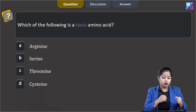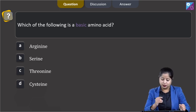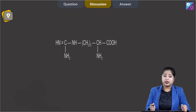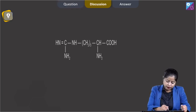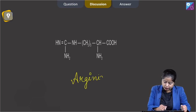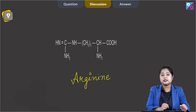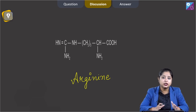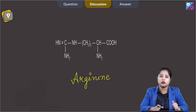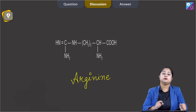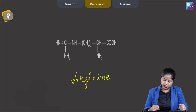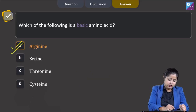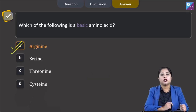Among the given options, arginine is a basic amino acid. You can clearly see in the structure of arginine that the number of amino groups are greater than the number of carboxyl groups. As a result, this amino acid is basic in nature. The correct answer is option A.